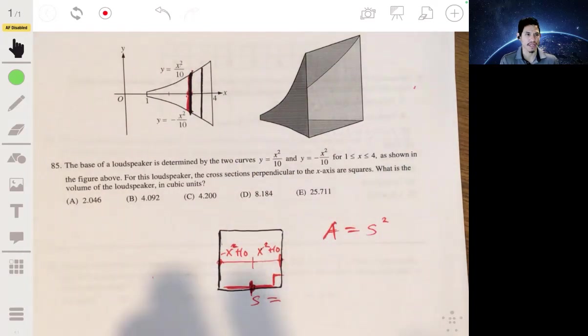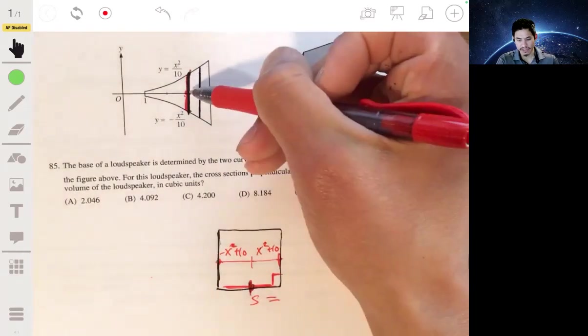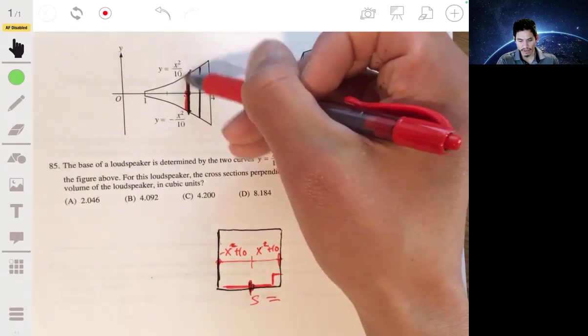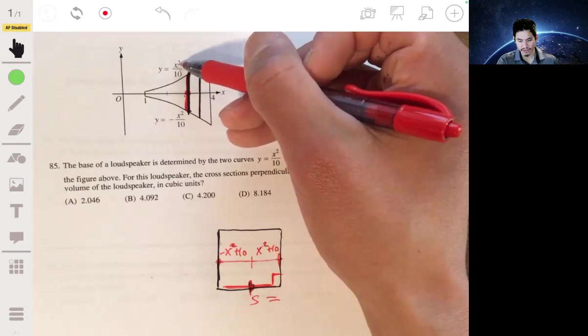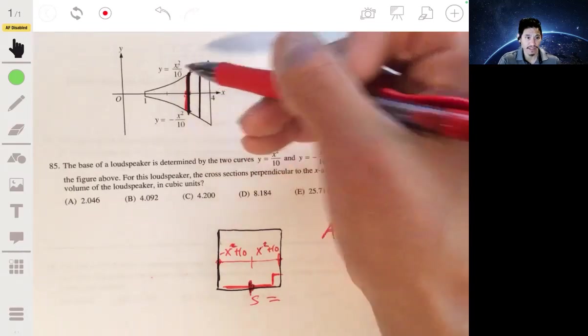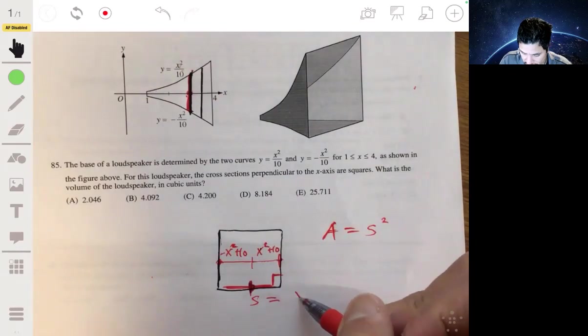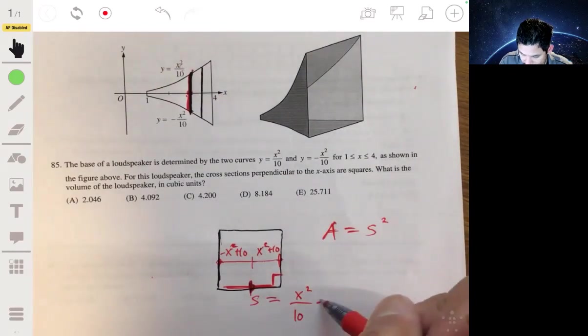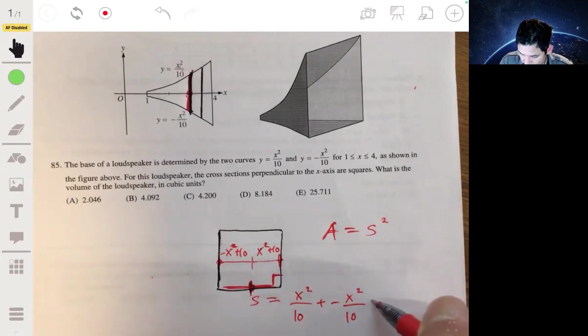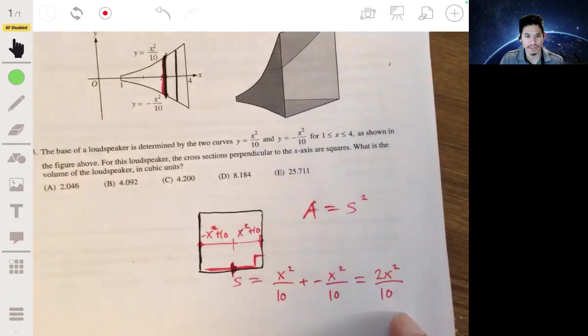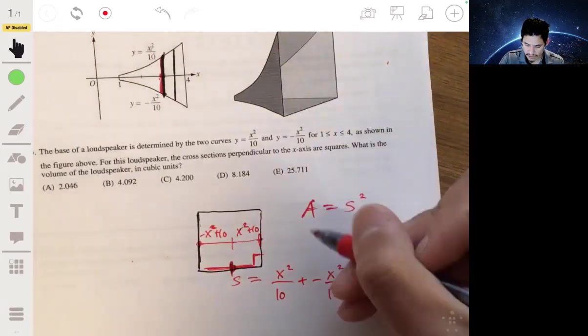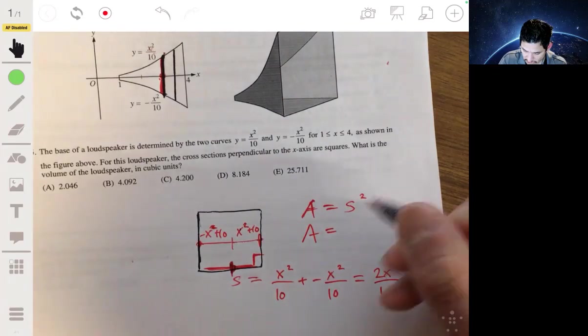This is just functions in terms of this graph, but we really just care about actual length, which is always positive. You can either double this function, 2 times x squared over 10, or you can add them: x squared over 10 plus negative x squared over 10. You still get 2 times x squared over 10.